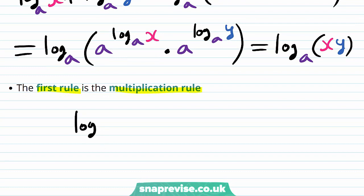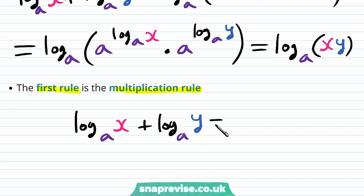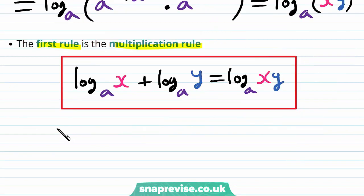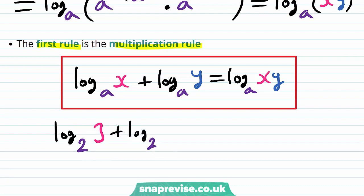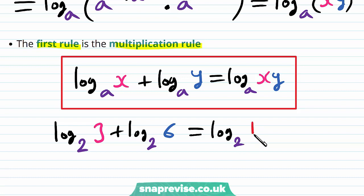Namely, the log base a of x plus the log base a of y is equal to the log base a of x times y. So let's say we have the log base 2 of 3 plus the log base 2 of 6. This would be equal, as one logarithm, as the log base 2 of 3 times 6, which is 18.